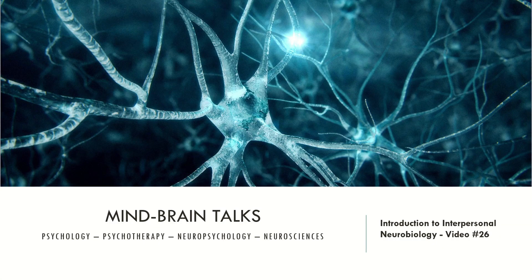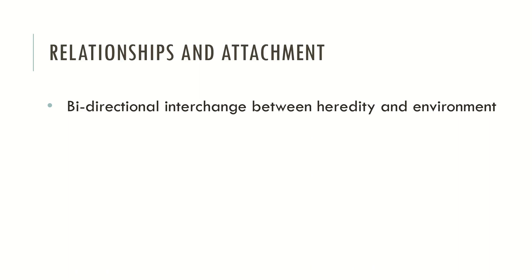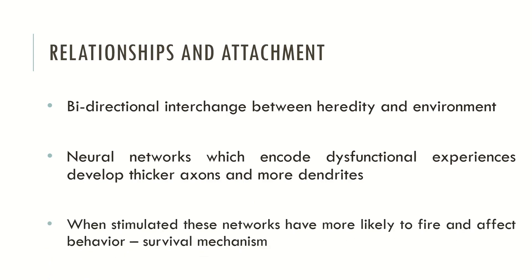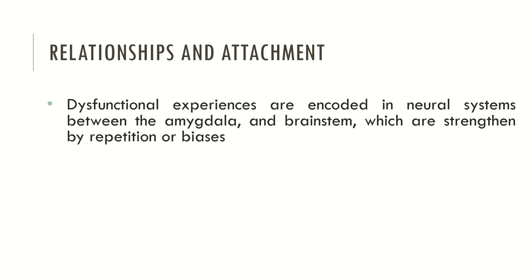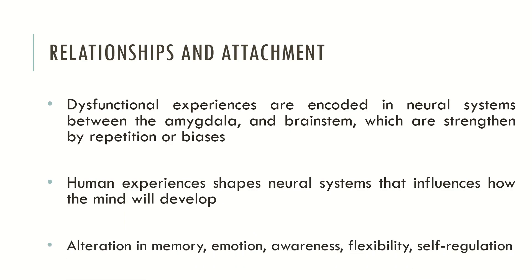Now let's look at how interpersonal neurobiology addresses attachment and interpersonal relationships. It is focused on how relations and attachment relate to mind and brain functioning. There is a bidirectional interchange between heritability and environment. Neural networks that encode dysfunctional experiences may develop thicker axons and more dendrites, and when stimulated, these networks are more likely to fire and affect behavior, because they may be related to survival mechanisms. Dysfunctional experiences are encoded in neural systems between the amygdala and the brainstem, which are strengthened by repetition or biases. Human experiences shape neural systems that influence how the mind develops, producing alterations in memory, emotion, awareness, flexibility and self-regulation.